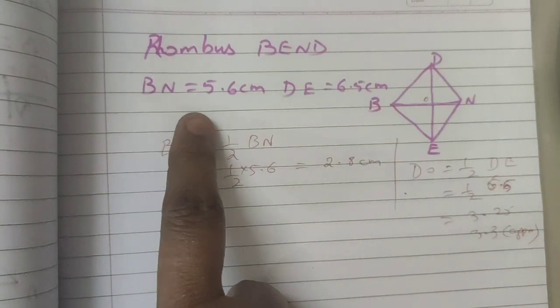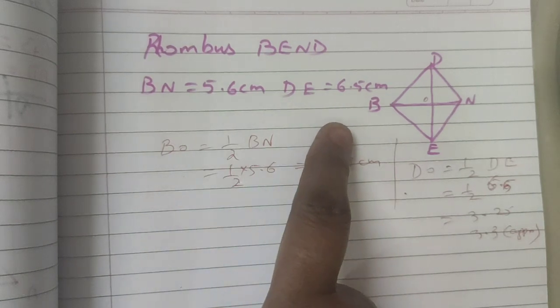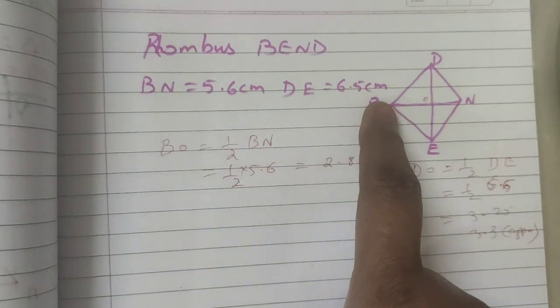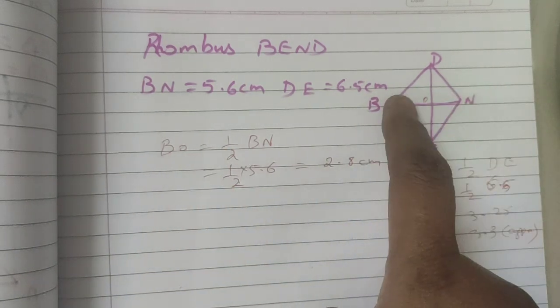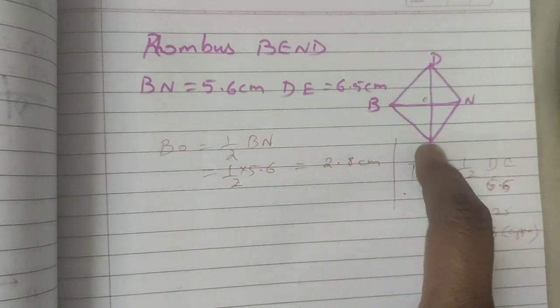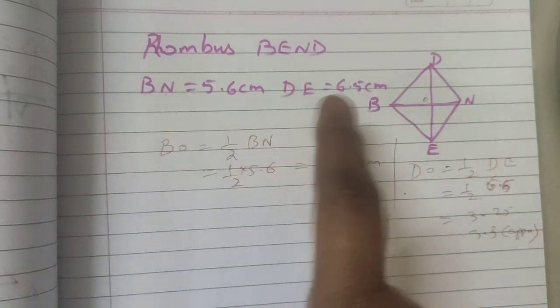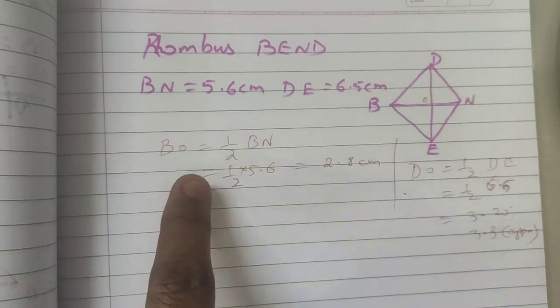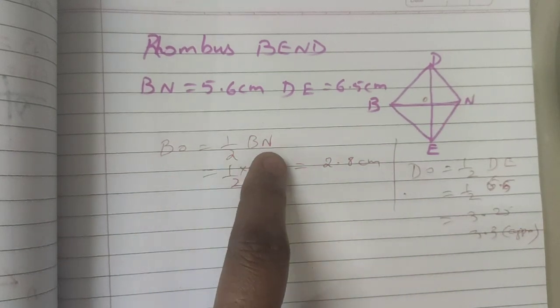So diagonal BN is equal to 5.6 and DE is equal to 6.5 cm. So if you take BN, DE will bisect BN. That is half of BN will be BO. That is BO is equal to half of BN.